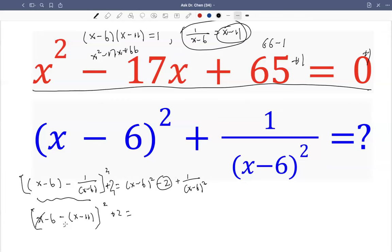x minus x becomes 0. So we have negative 6 minus negative 11, which becomes plus 11, squared, plus 2. So minus 6 plus 11, that's 5. 5 squared plus 2. Well, 5 squared is 25, 25 plus 2.